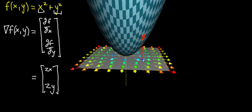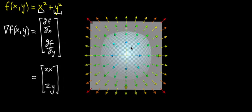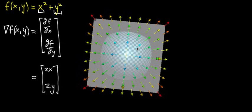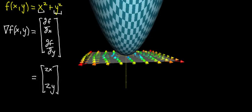If you project your point down onto the input space, the vector that's going to get you going uphill the fastest — for this graph — is directly away from the origin, because that's where it's steepest. And all of these gradient vectors are also pointing directly away from the origin. So people say the gradient points in the direction of steepest ascent.